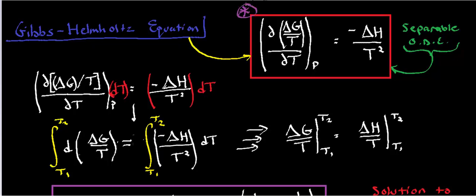Basically what it says, and it's very complicated looking, but we'll break it down slowly but surely and show you how it's useful. The partial derivative of free energy change over temperature with respect to temperature at constant pressure is equal to negative delta H over T squared. So this is in itself what we call a separable ordinary differential equation, but the Gibbs-Helmholtz equation is a separable differential equation.